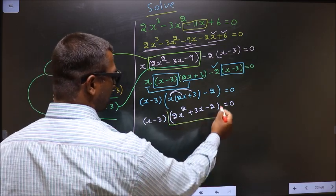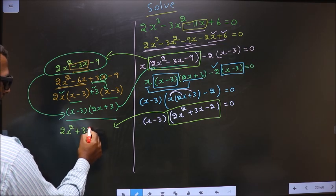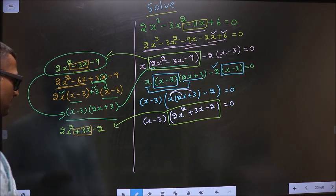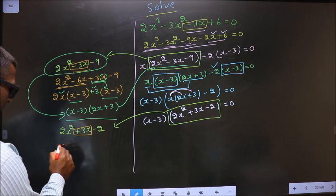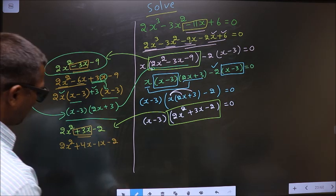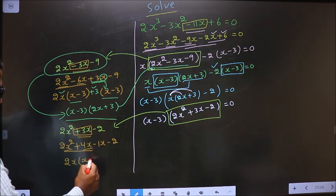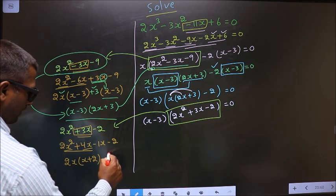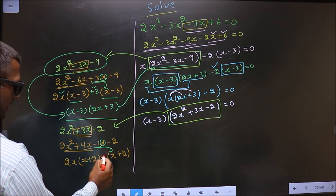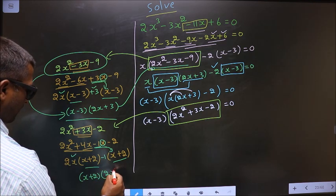Now I got a quadratic, so I will factorize 2x² + 3x - 2. To factorize this I should change the middle term, plus 3x. So 2 into 2 is 4. 4 minus 1 is 3. So in place of 3x I write plus 4x minus 1x minus 2. What can be taken common from the first two terms is 2x, giving x plus 2. Here also you should get the same thing. From this x has gone inside, so outside you are left with minus 1. Now you take out x plus 2 common. So here you have 2x and here you have minus 1.